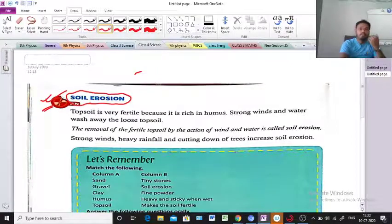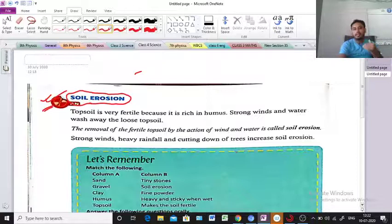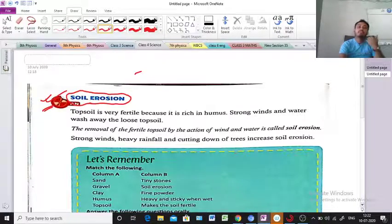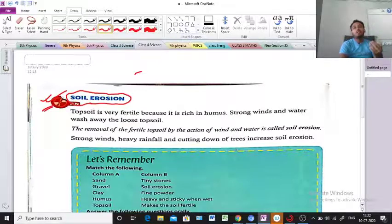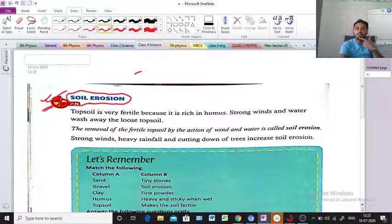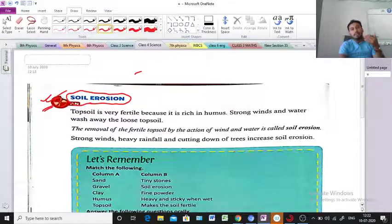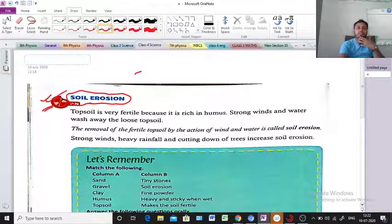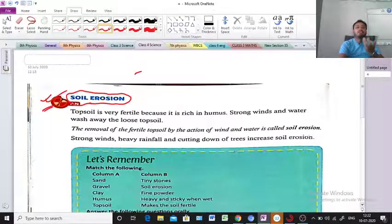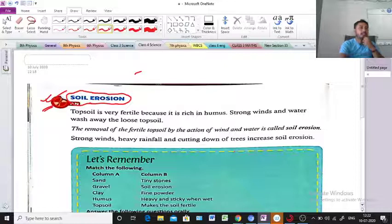The topsoil, the topmost layer of the soil, is very fertile because it is rich in humus. Humus is the decayed organic matter on the surface that makes the soil fertile.